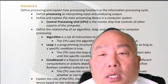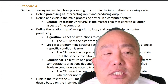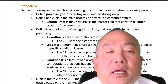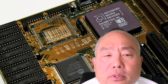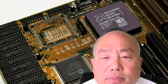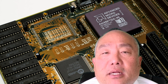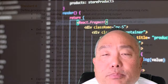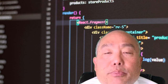Standard 4: Define processing and explain how processing functions in the information processing cycle. Define and explain the main processing device in a computer system. Central processing unit, or CPU, is a master chip that controls all other aspects of the computer. Algorithm is a set of instructions to complete a task. The CPU uses the algorithm as an input to produce output.